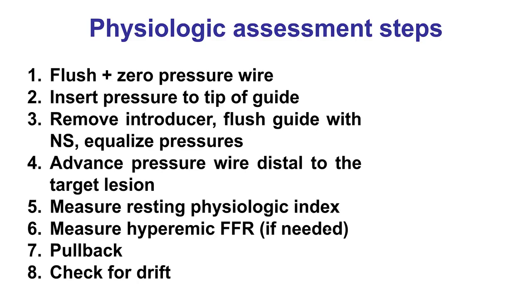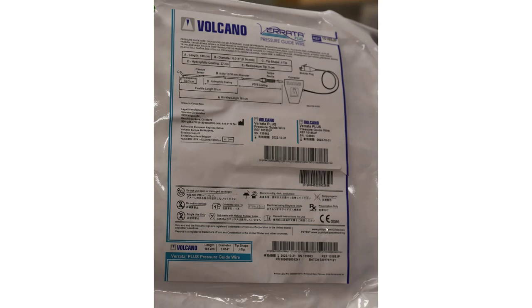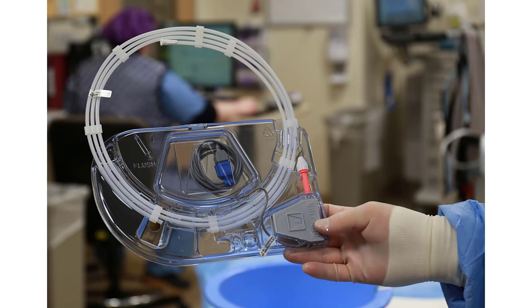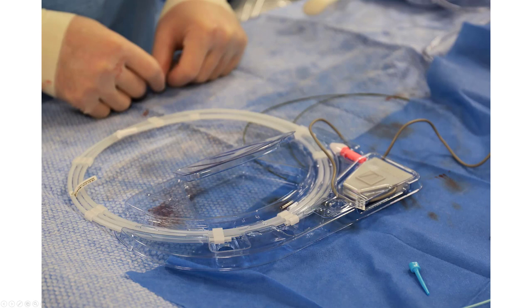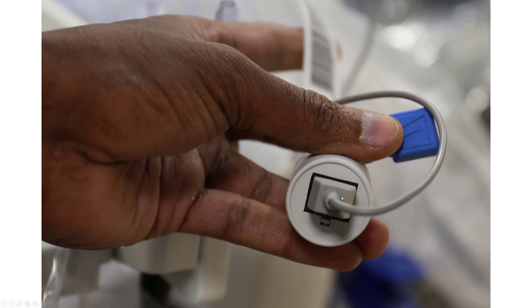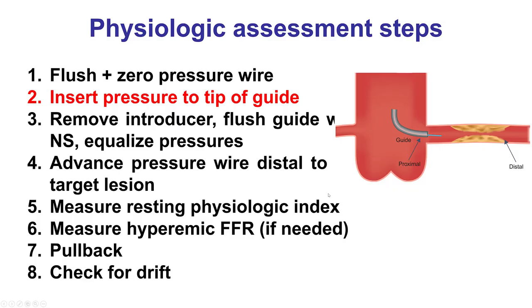Here is a step-by-step description of coronary physiology assessment. Step one is to flush the guide catheter and zero the pressure wire. This is the Volcano pressure wire — it is taken out of the box, flushed, and connected to the PIM (Philips Interface Module), and then it is ready to be used.